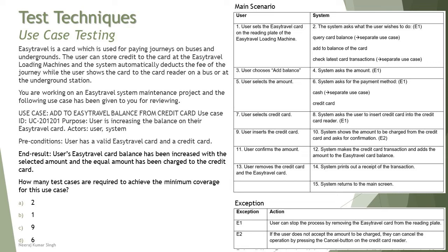The question asks: how many test cases are required to achieve minimum coverage for this use case? The answer is straightforward. First, one successful positive test case covers steps 1 through 15 - the full successful transaction. Then E1 is marked at steps 4, 6, and 8 - that's three additional test cases - and E2 at step 10 gives one more. Wait - reviewing carefully: E1 appears at step 4, step 6, and step 8 (three exceptions), plus E2 at step 10, totaling four exception test cases, plus one successful path gives six test cases total. Separate use cases each have their own unique ID and separate test cases.